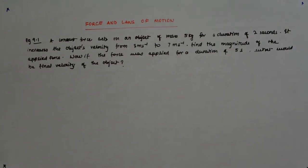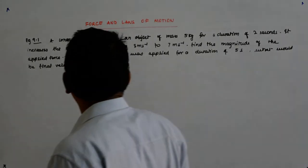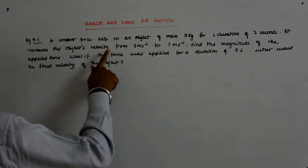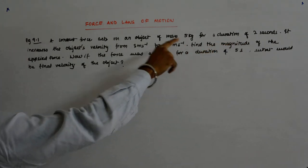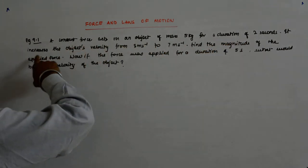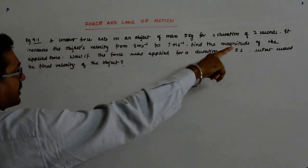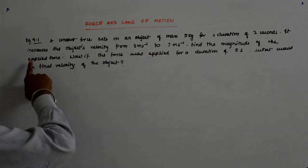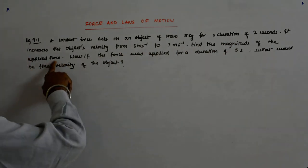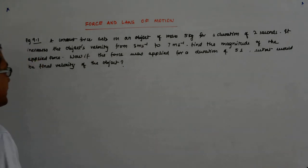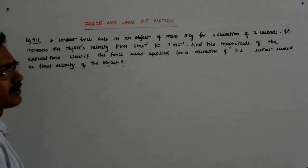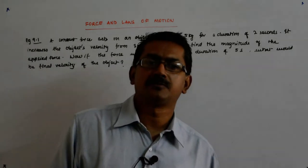Let us solve this question. A constant force acts on an object of mass 5 kg for a duration of 2 seconds. It increases the object's velocity from 3 meter per second to 7 meter per second. Find the magnitude of the applied force. Now if this force was applied for a duration of 5 seconds, what would have been the final velocity of the object?